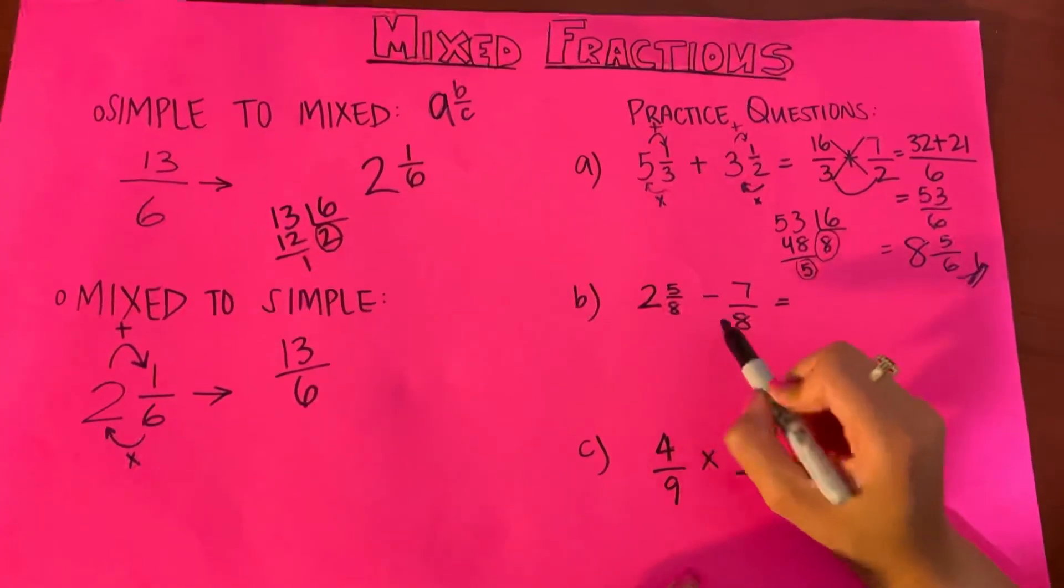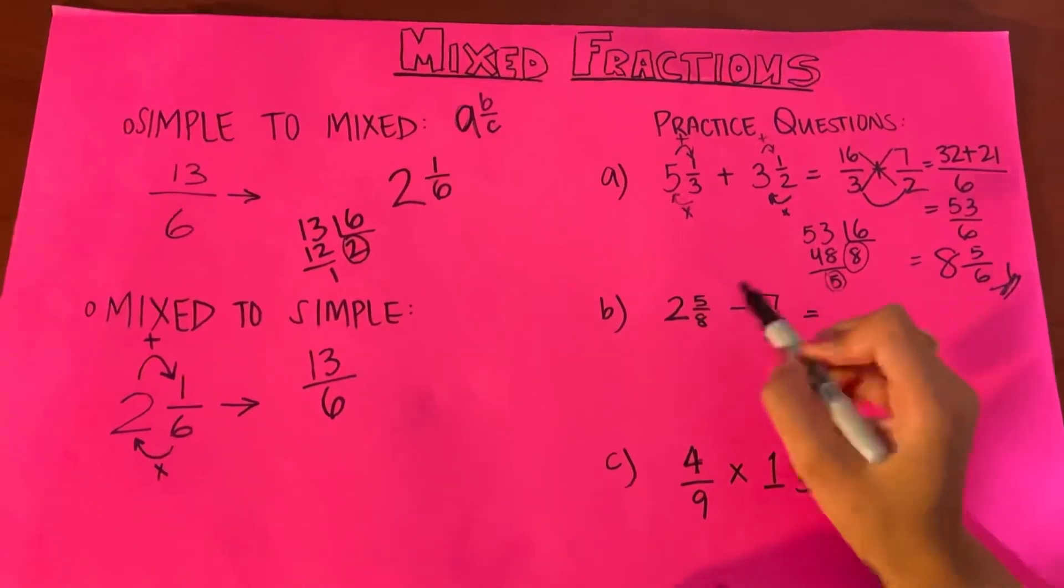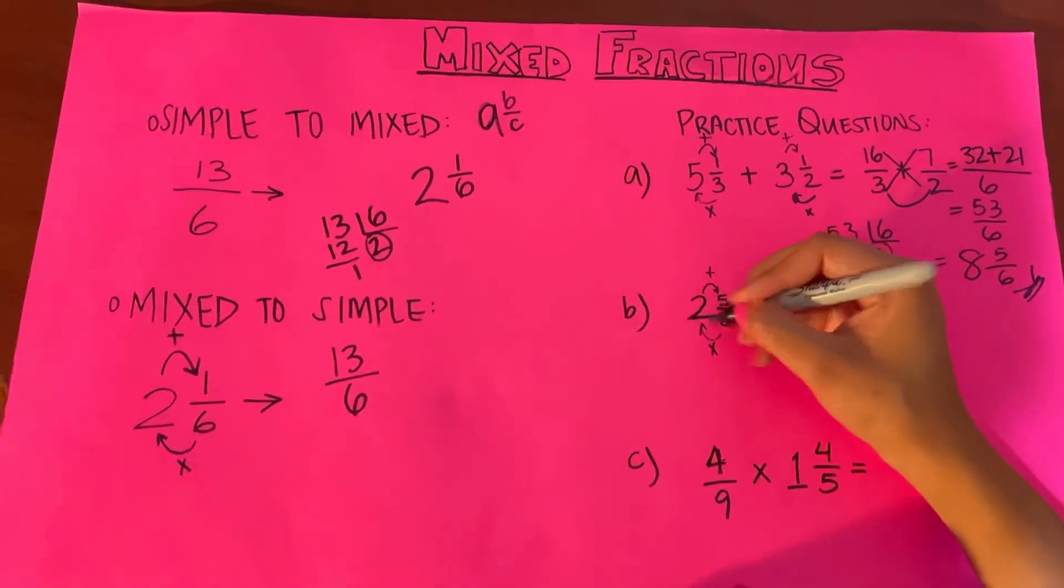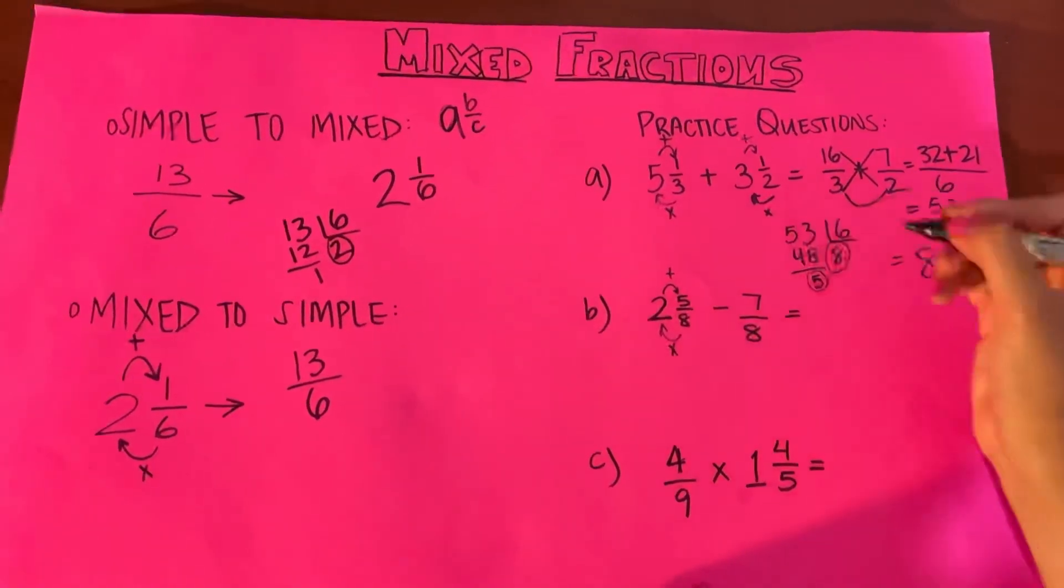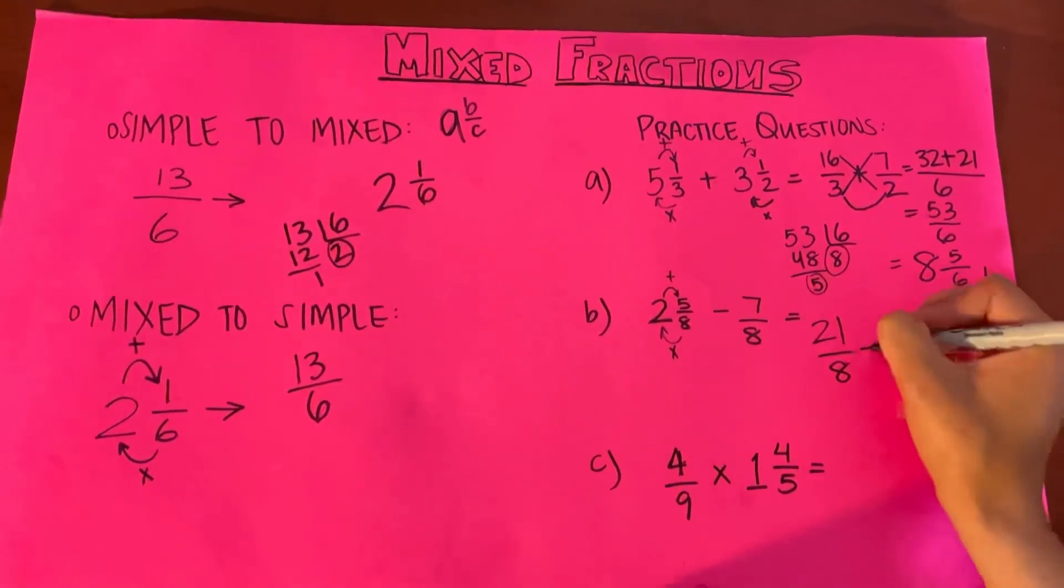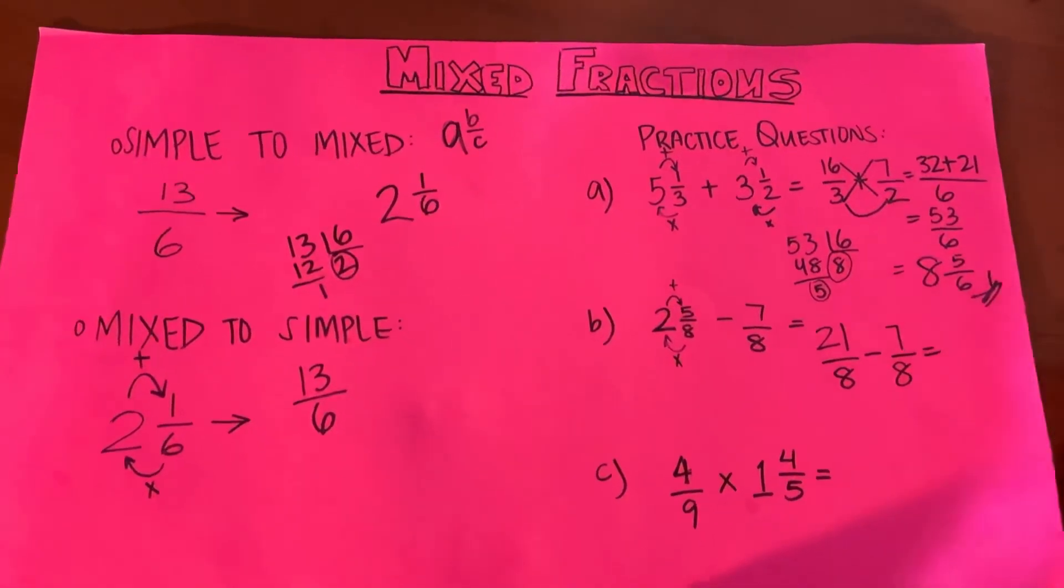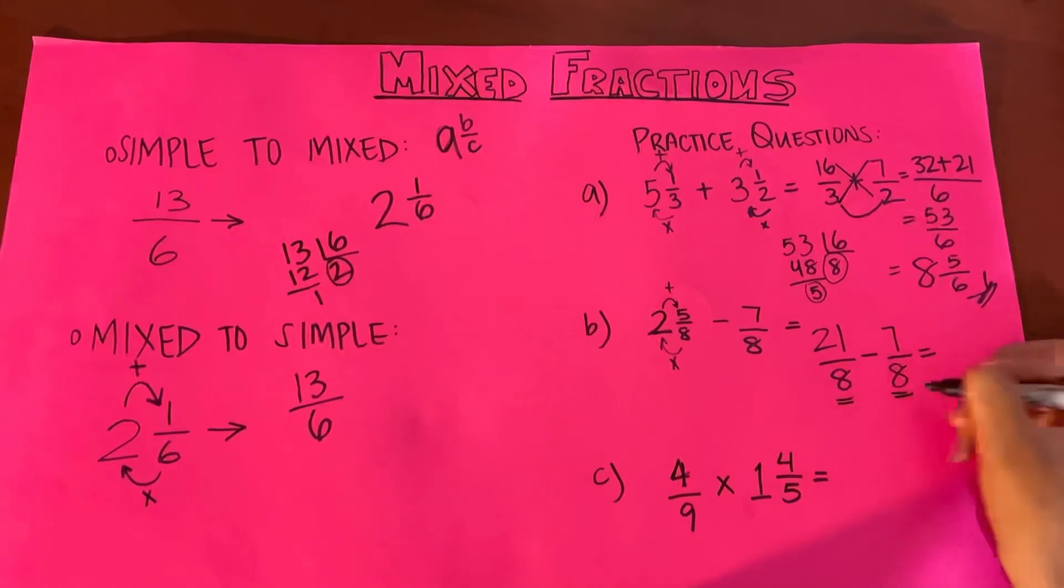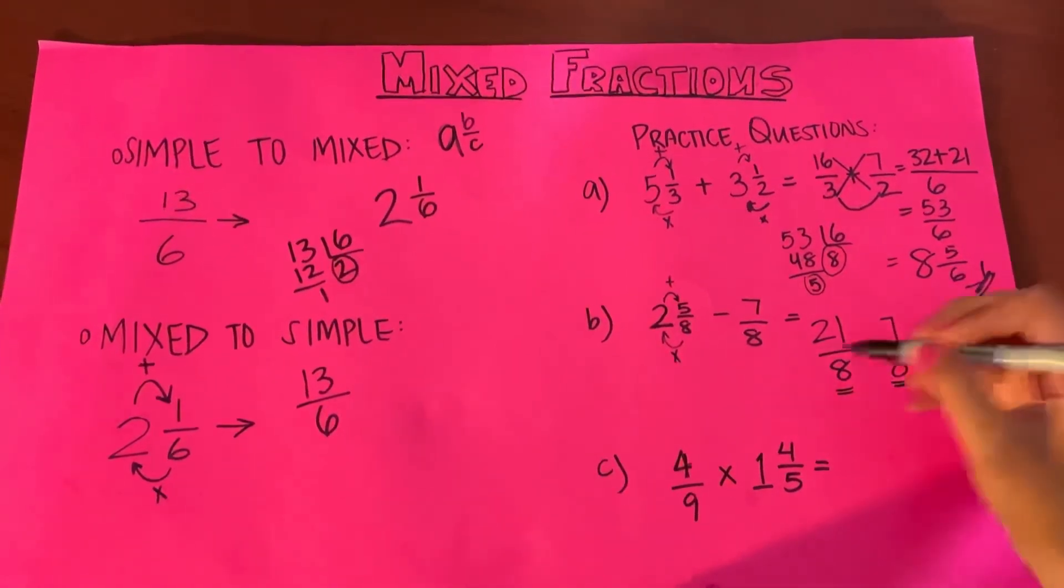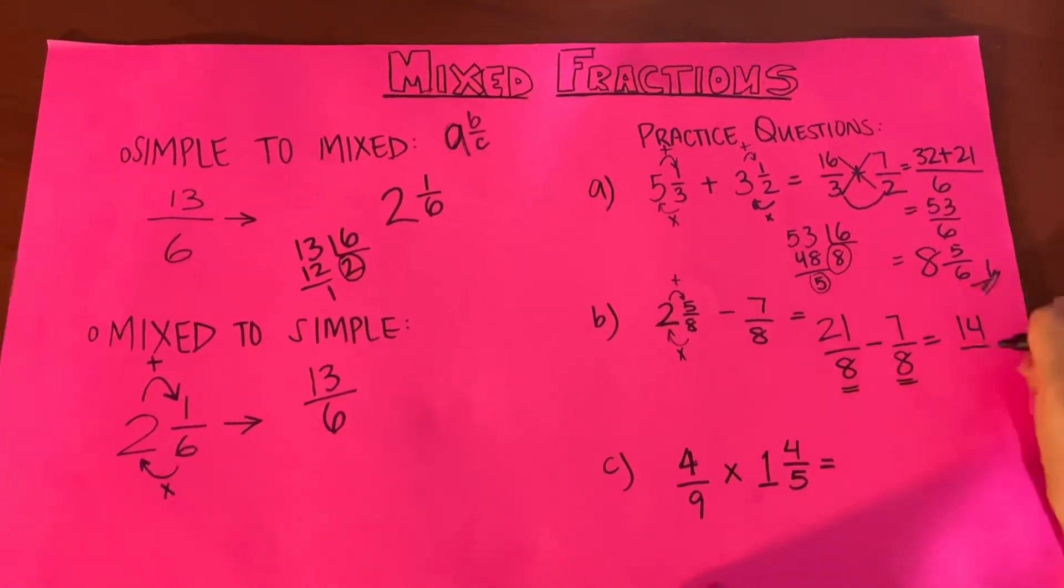In this question, we only need to convert this into simple because this is already in simple fraction. So let's do it again: 2 multiplied by 8, 16 plus 5 is 21 over 8 minus 7 upon 8. So here, because the denominators are the same, you subtract it straight. So 21 minus 7 is 14, and this copy is the same.